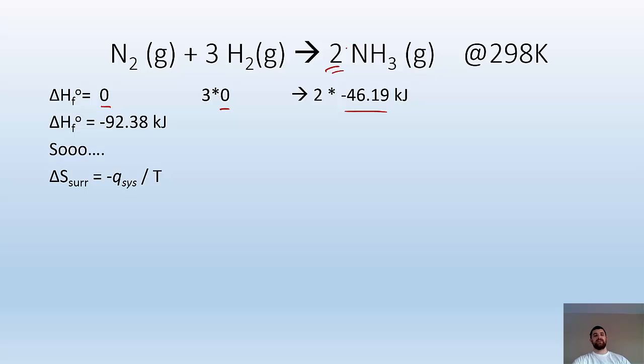ΔSsurroundings = -Qsystem/T = 92.38 kJ / 298K = 310 joules per Kelvin. That's the ΔS for the surroundings.